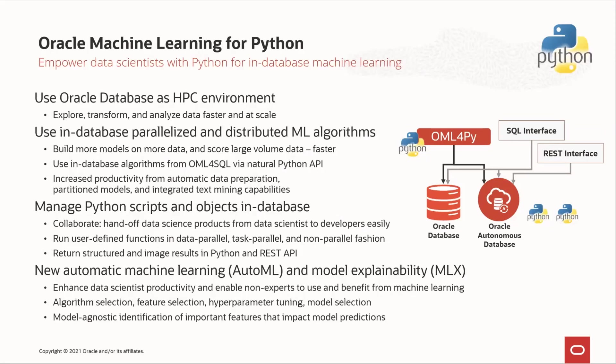Now let's focus on OML for Python. Oracle Machine Learning for Python leverages the database as a high-performance computing environment, manipulating database tables and views through pandas DataFrame proxy objects with overloaded functionality that's translated to SQL transparently behind the scenes. This enables exploring, transforming, and analyzing data faster and at scale by keeping data in the database, while allowing the use of familiar Python syntax to manipulate database data. The in-database parallelized machine learning algorithms are exposed through a natural Python interface. With OML for Python, users can build more models on more data and score large volume data faster, taking advantage of Oracle Autonomous Database optimizations, including Autoscale.